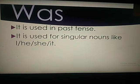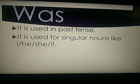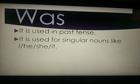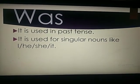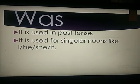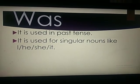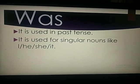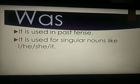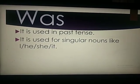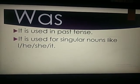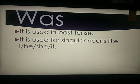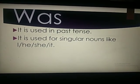Was is used in past tense. It is used for singular nouns like I, he, she, it. Was kis ke saath use hota hai? Past tense mein. Aur singular nouns. Singular matla one ke liye. Jis se I, mein, he — kishi bhi boy, she — kishi girl ke liye. Aur it, koii ek chiz ke liye.